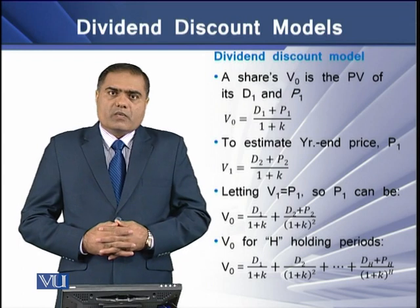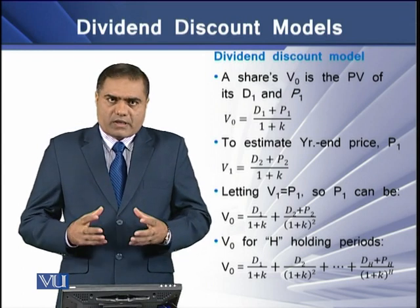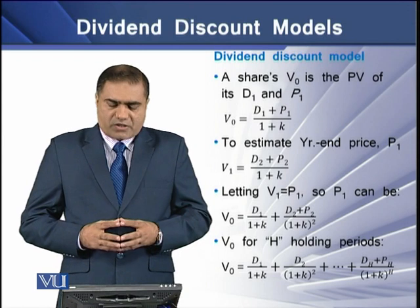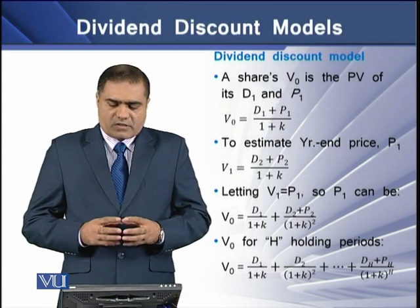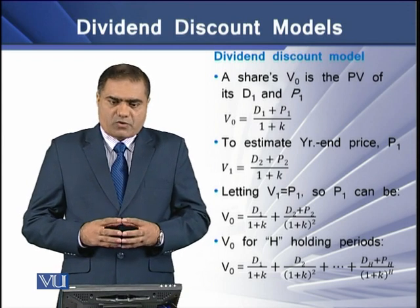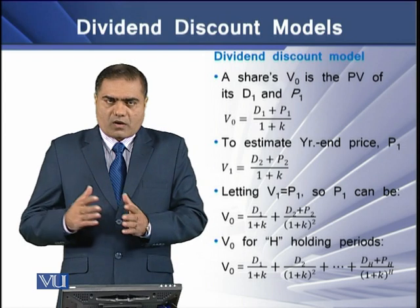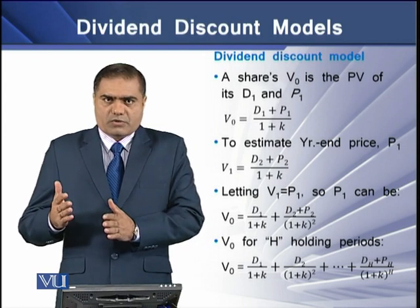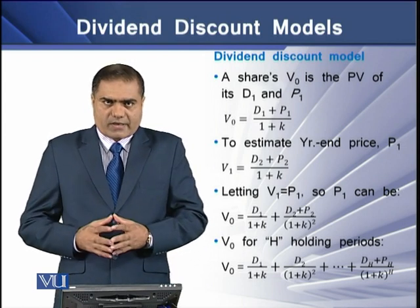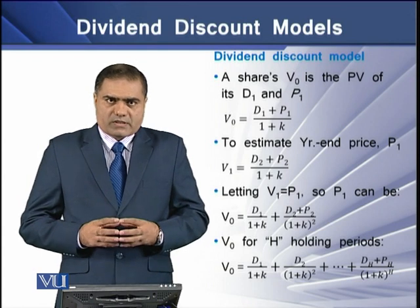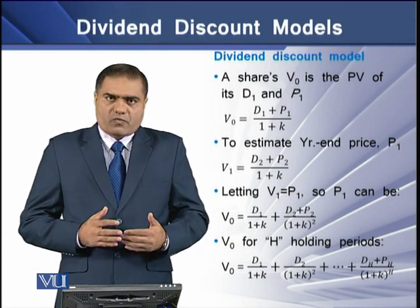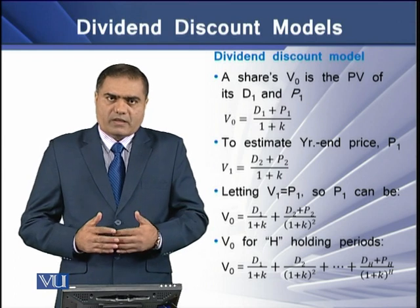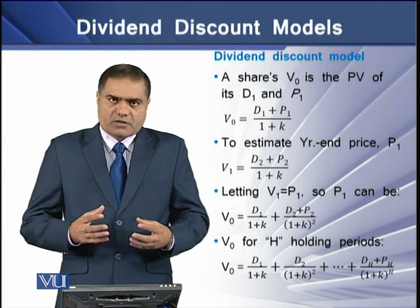The dividend discount model states that a share's intrinsic value is the present value of all its future dividends and its future sale price. So V0 is equal to D1 plus P1, divided by the capitalization rate.